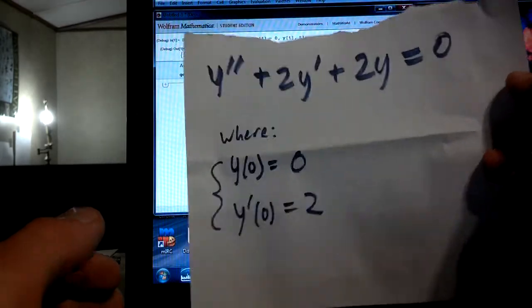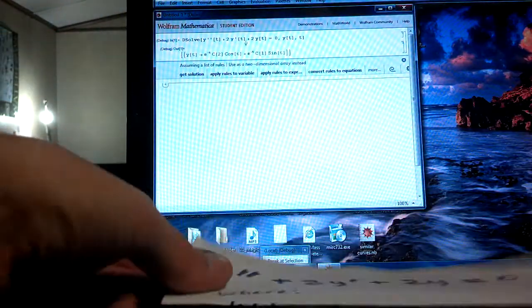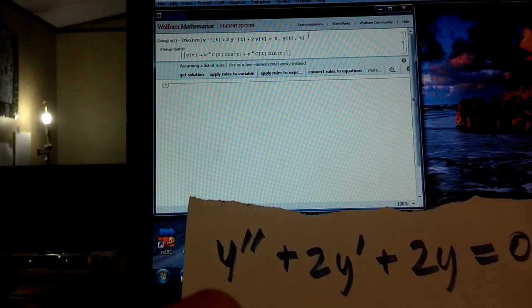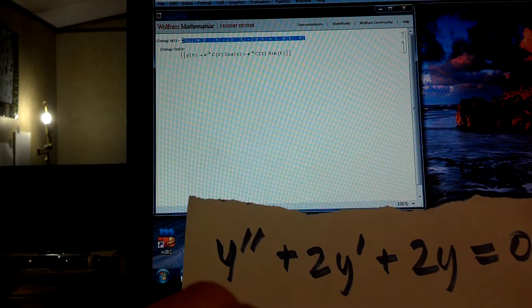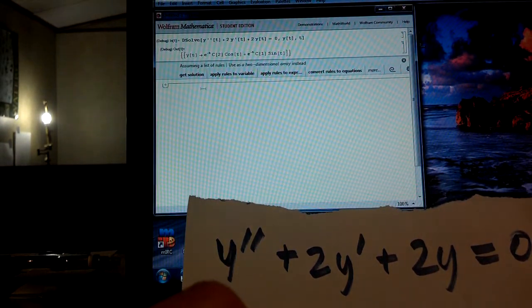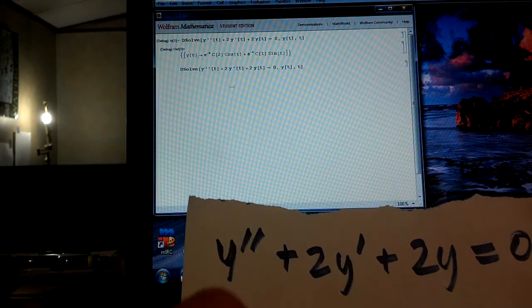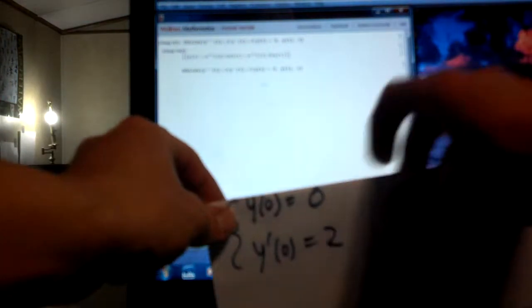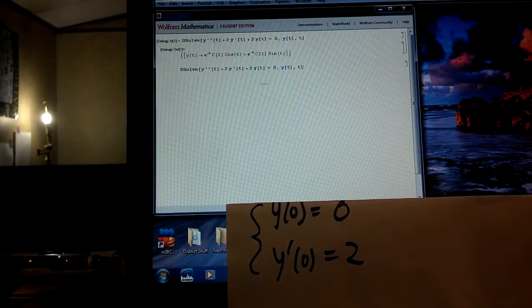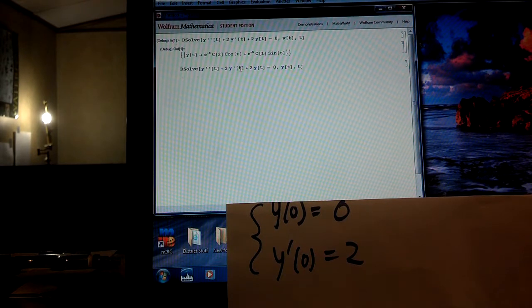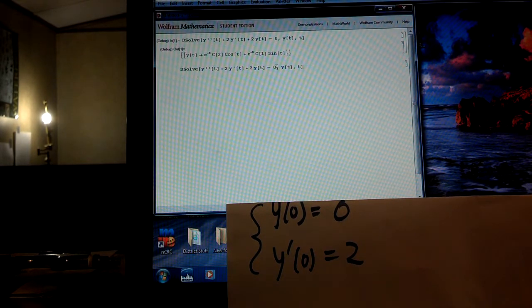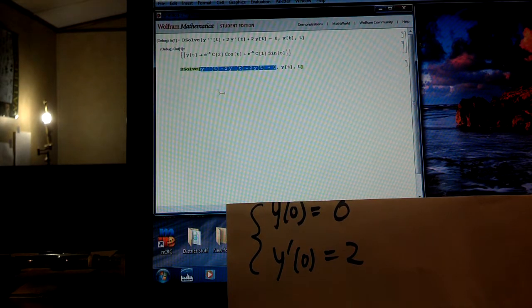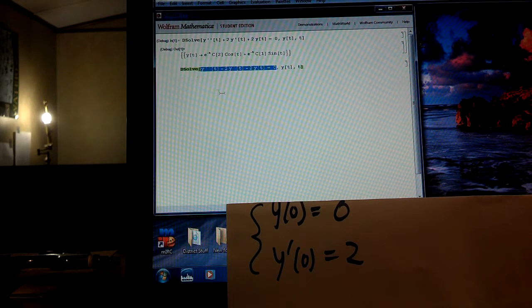The way that we're going to go about doing this is I'm going to just go to what I input before, and I'm going to copy it and paste it, and now I'm going to just change it a little bit. And the two conditions that we were given were the following: y(0) is 0. So, this right there, it was the original differential equation. So around it, you're going to put squiggly brackets.